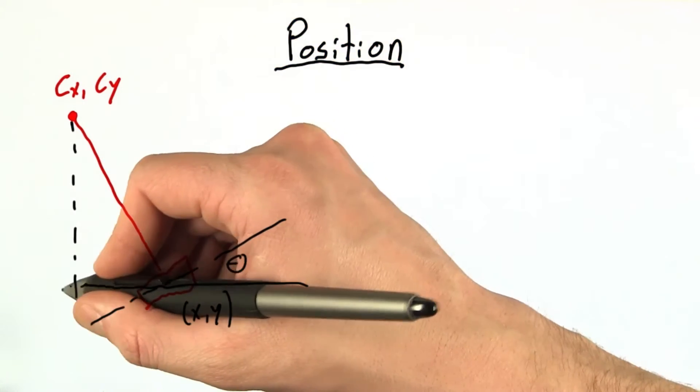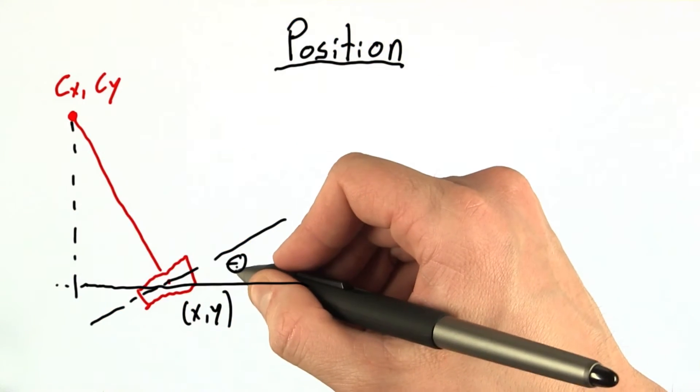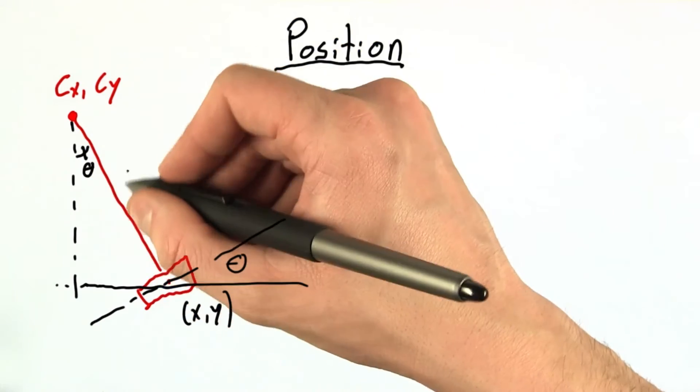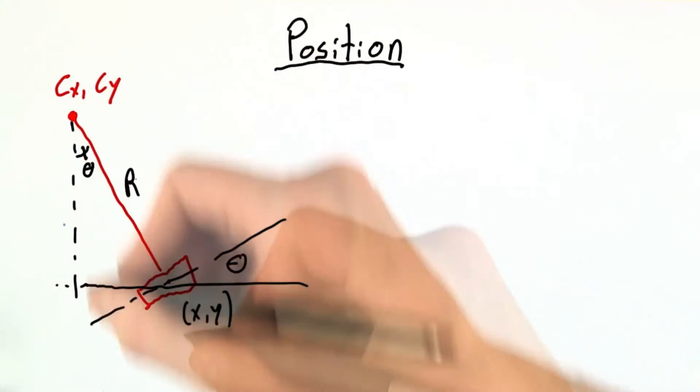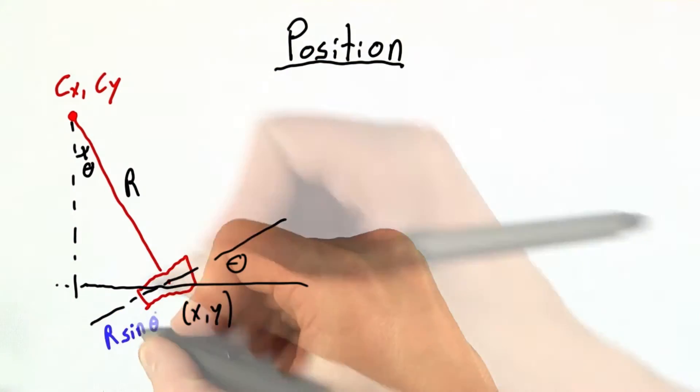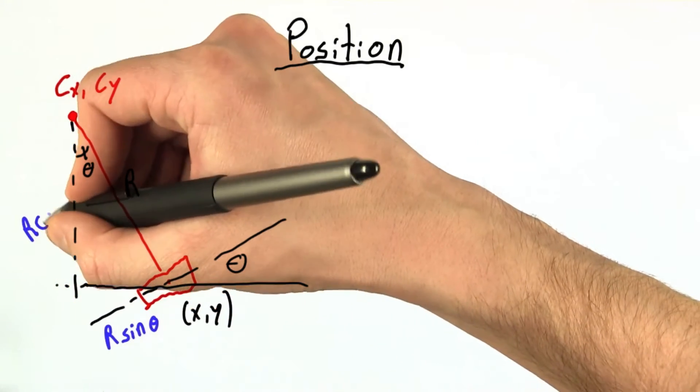Well, we just define a right triangle and we see that if this angle is theta, we can show this angle must also be theta. This length is r, so that means this horizontal distance is r times the sine of theta and the vertical distance is r times the cosine of theta.